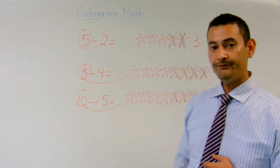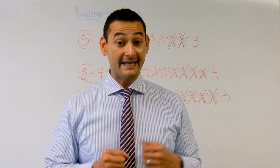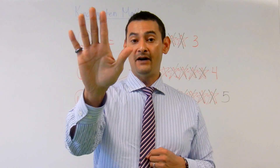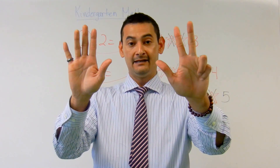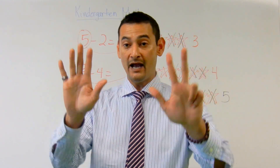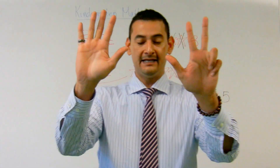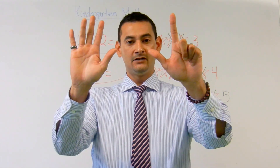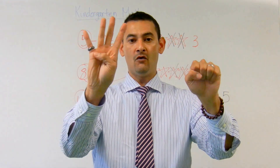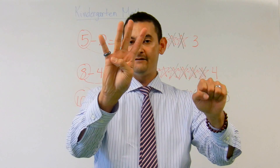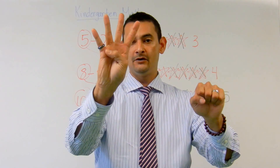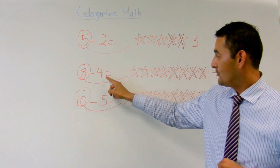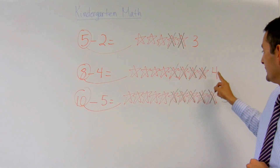Now let's take a look at eight minus four. I'm going to count to eight: one, two, three, four, five, six, seven, eight. I'm going to take away four — one, two, three, four. How many do I have? One, two, three, four. Eight take away four equals four.